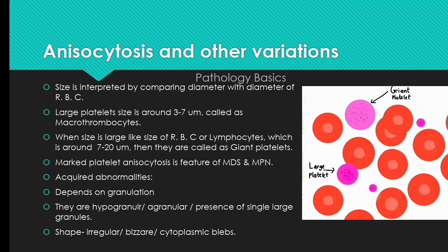And when the size is large, like the size of an RBC — around 7 to 20 microns — then they are called giant platelets. Marked platelet anisocytosis is a feature of myelodysplastic syndrome and myeloproliferative neoplasm.